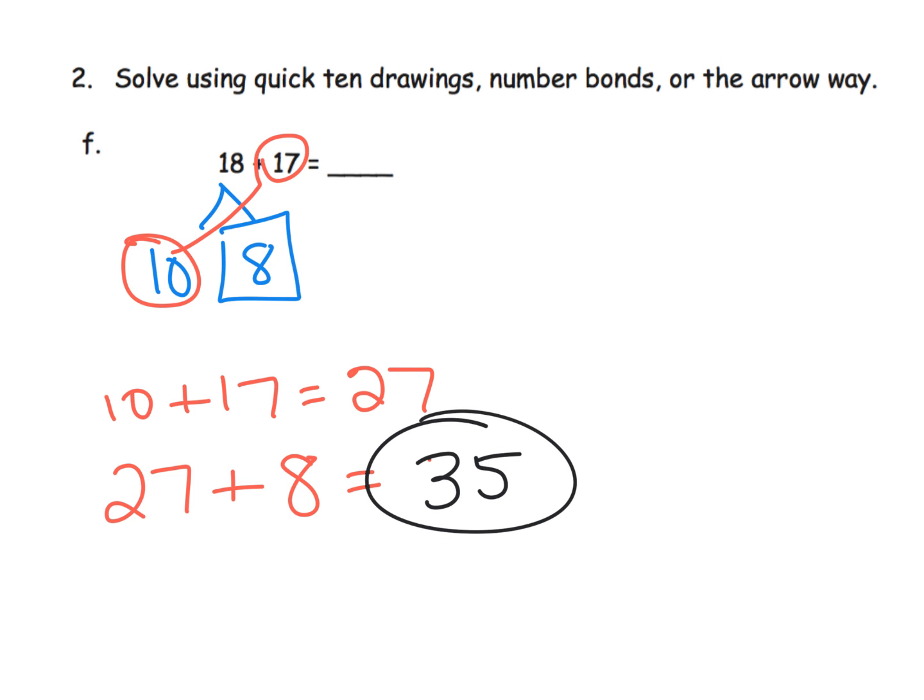Now, how did we get 35? Some students might decompose 8 to be 3 and 5. 27 and 3 is 30. Plus the remaining 5 gives us 35. That's one way. Keep in mind, this is not the standard algorithm. This is just a method based on number sense that helps students develop the ability to do mental math.